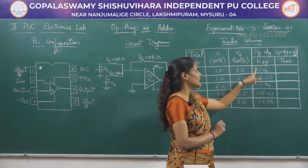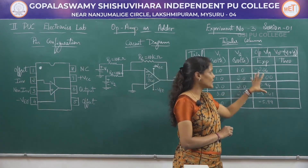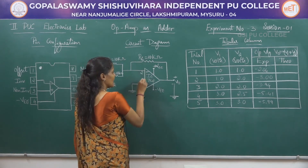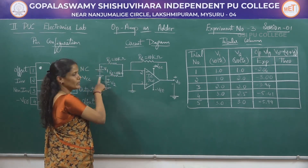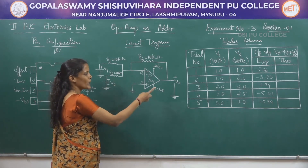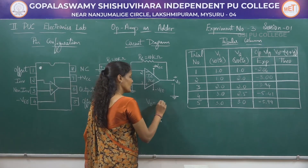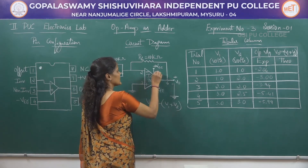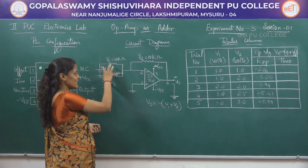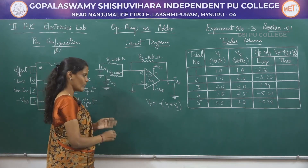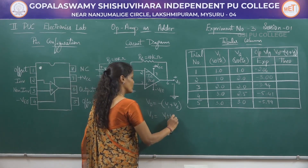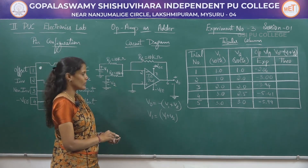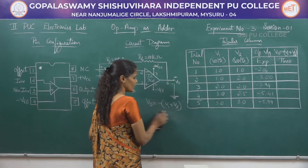You must carry the negative symbol in the theoretical column because the output voltage is the inverted version of the input voltage. Since we are applying input voltages V1 and V2 to pin number 2, the output must be negative — V0 equals the inversion of the sum of the two input signals: minus of V1 plus V2. If those sources were connected to the non-inverting input terminal, the output would be V0 equals V1 plus V2 only. But in this experiment both sources are connected to the inverting input terminal.